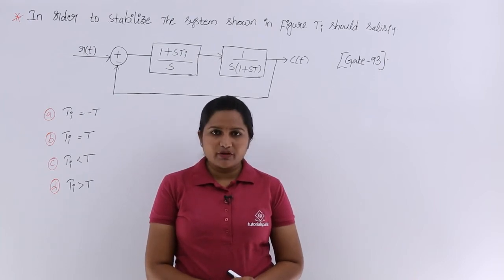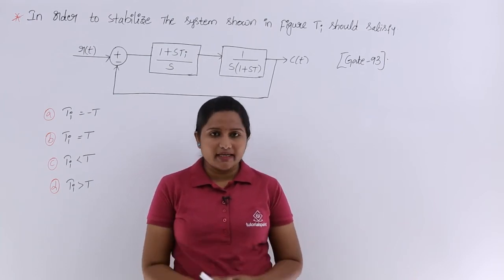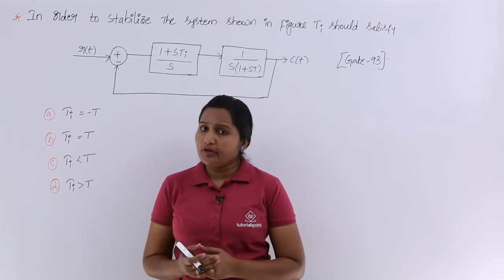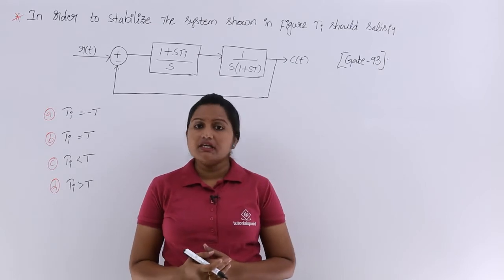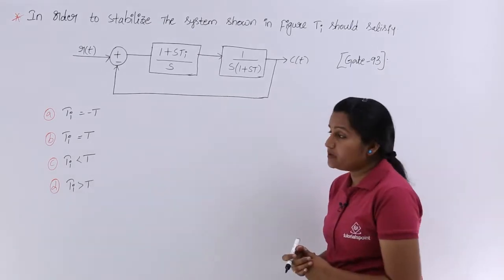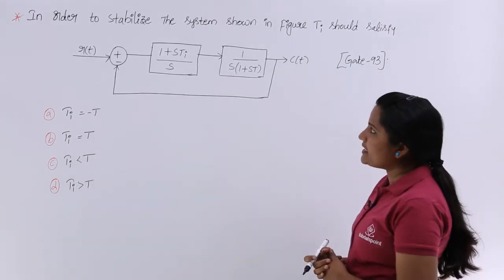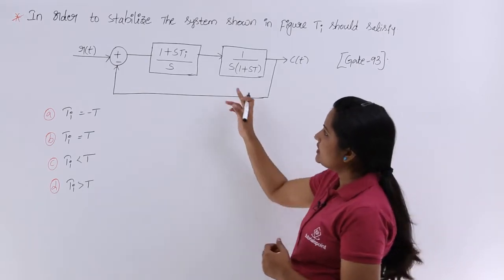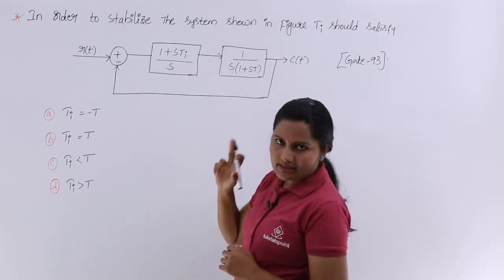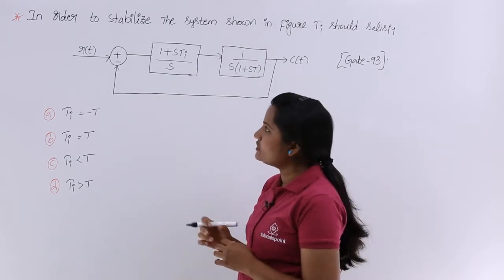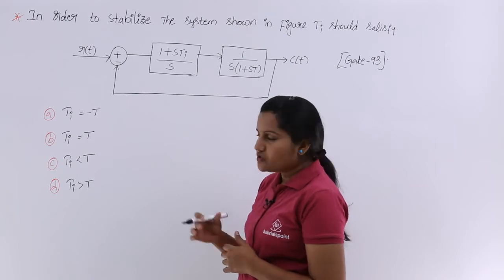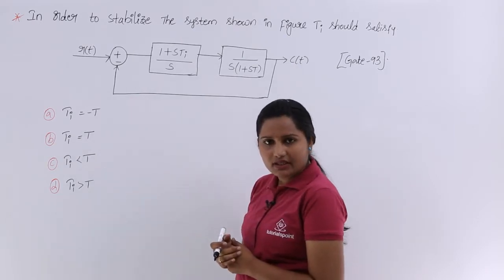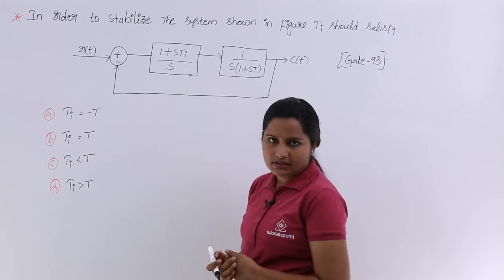In this video we are going to discuss one more Gate problem related to stability analysis. This problem is from Gate 93. The problem states: in order to stabilize the system shown in the figure, Ti should satisfy a certain condition. We need to find which condition Ti must satisfy to make the system stable.